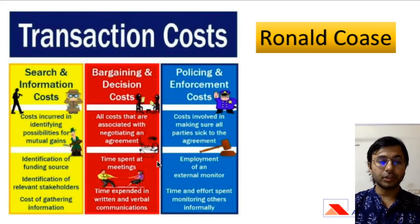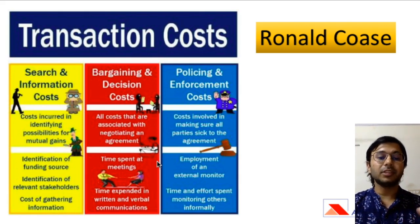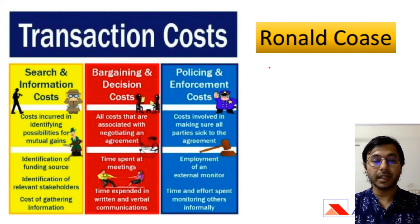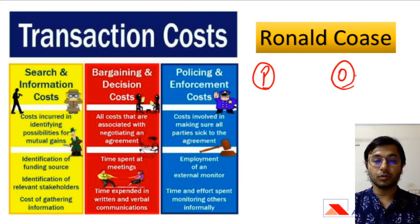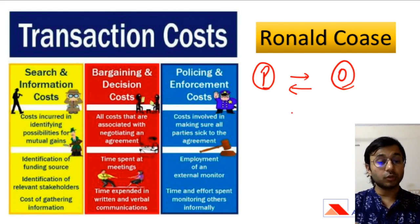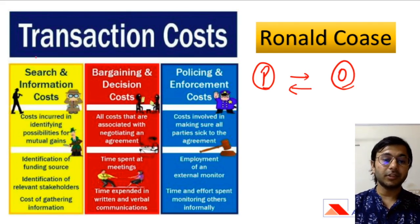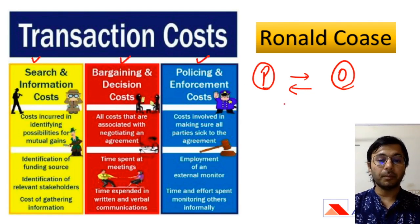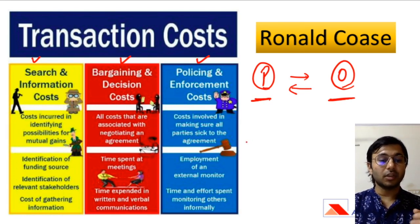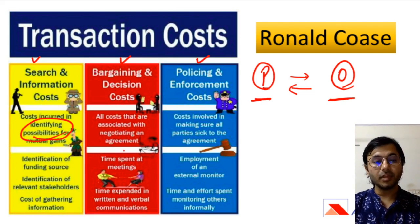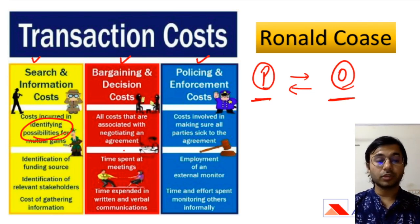The second theory is transaction cost theory, which was given by Ronald Coase. According to him, there are different kinds of transaction costs which help us determine whether to produce something or whether to outsource it. You compare three major transaction costs for both options. Number one is search and information costs, which is the cost incurred in identifying possibilities for mutual gains — costs incurred when researching or identifying whether a gap or any possibility exists.